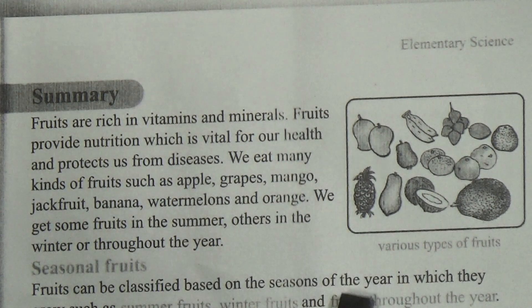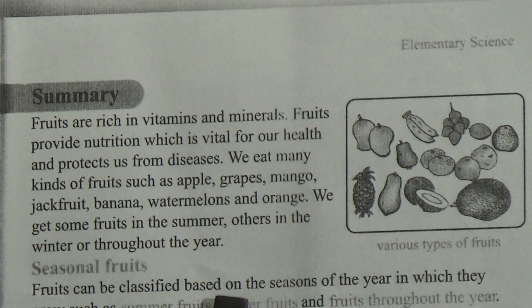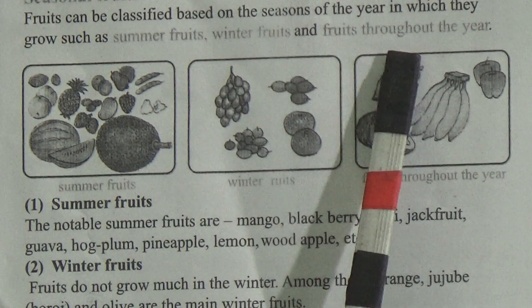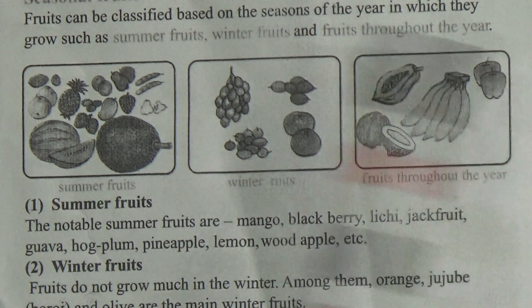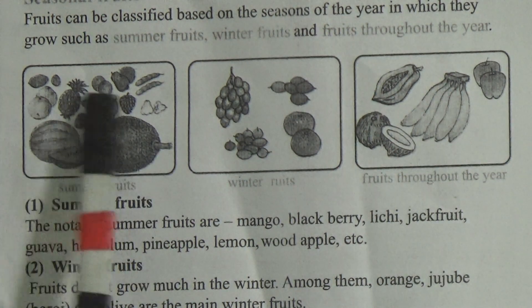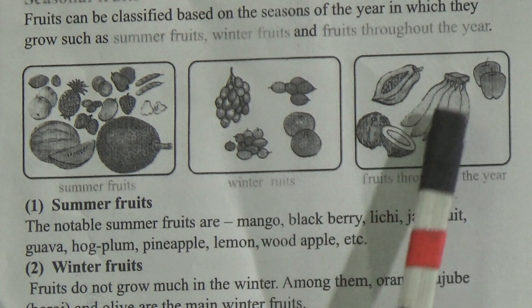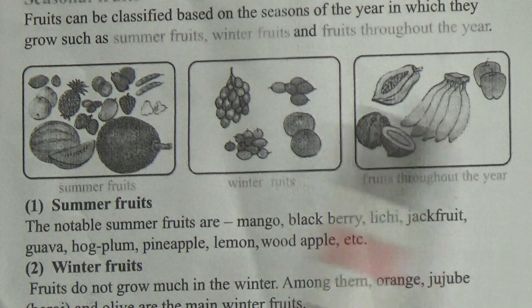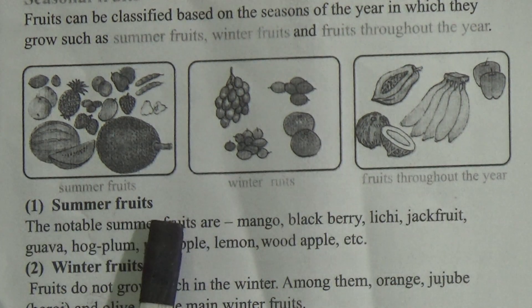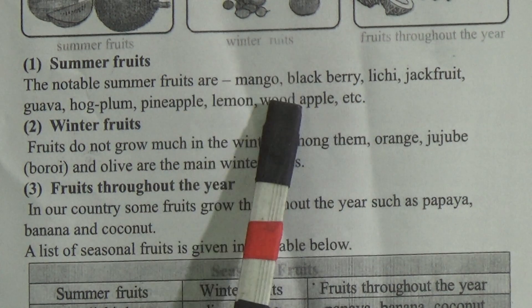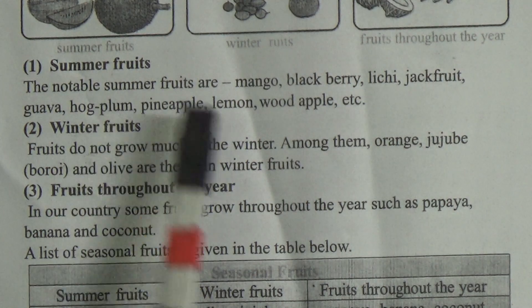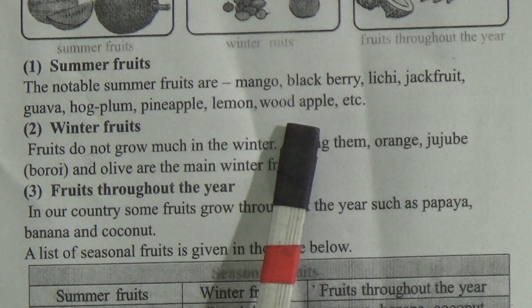Now, seasonal fruits. Fruits can be classified based on the seasons of the year in which they grow, such as summer fruits, winter fruits, and fruits throughout the year. The notable summer fruits are mango, blackberry, lychee, jackfruit, guava, hog palm, pineapple, lemon, wood apple, etc.